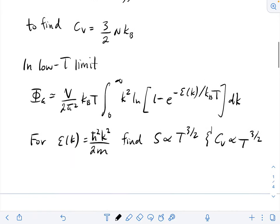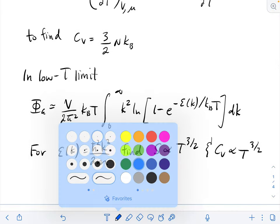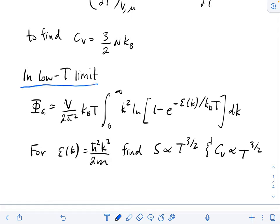Then we looked at the low temperature limit, where we assumed the chemical potential divided by kb t goes to 0 as t goes to 0. In that limit, we got an entropy proportional to t to the 3 halves, and the heat capacity also has a t to the 3 halves dependence.